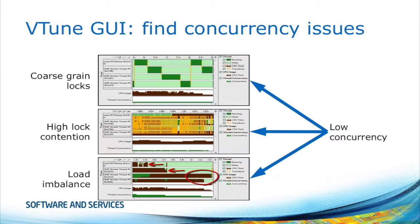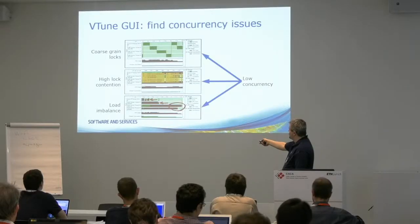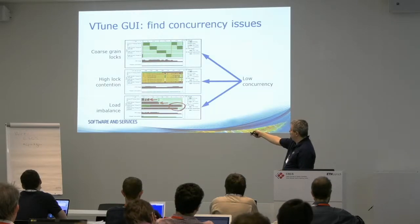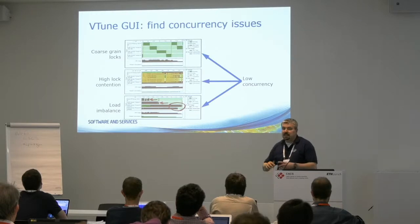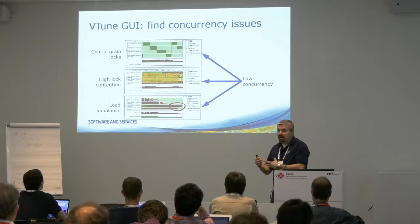We are all parallelism experts so we don't use locks at all, right? But sometimes you have to. What you see is typical behavior — a coarse grain lock looks like this in the timeline where you see that you have four threads running, but they are actually running sequentially because the lock is too coarse grained. That's probably an issue that was pointed out in Quantum Espresso, where the problem was a coarse grain lock.